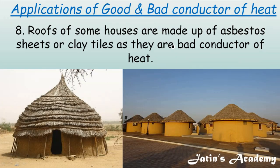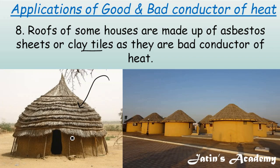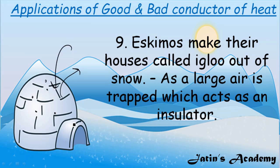Eighth application: roofs of some houses are made of asbestos sheets or clay tiles because asbestos is a bad conductor of heat, which does not allow outside heat to come inside the house, keeping persons inside more comfortable in summer. Ninth application: Eskimos make houses called igloos out of snow because snow has large amounts of air trapped in its pores. Air being a bad conductor does not allow inside heat to escape or cold breeze to enter.